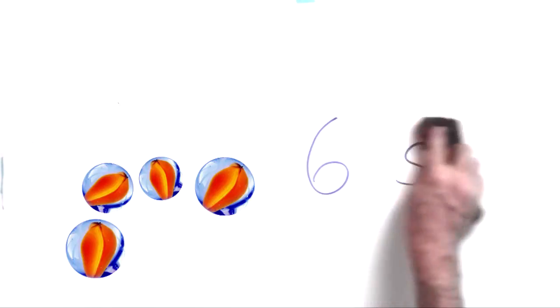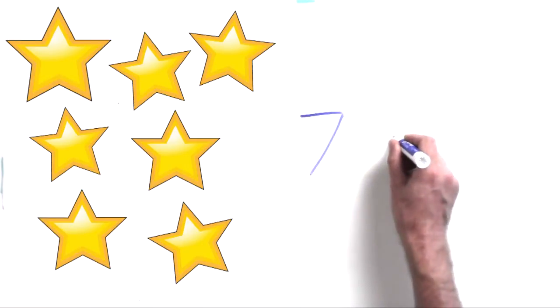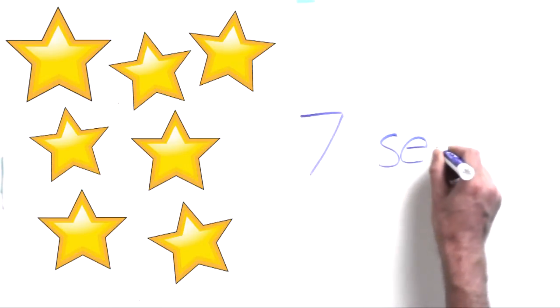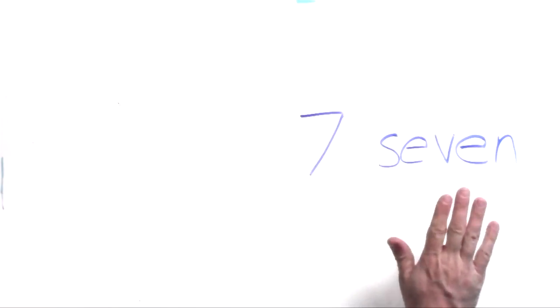Now we're going to do seven. Let's do something a little different — let's do stars. Let's count seven stars. Count them with your finger: one, two, three, four, five, six, seven. We have seven stars. Now here's how we write the word seven — S-E-V-E-N. Seven. We have seven stars. The number seven and the word seven.